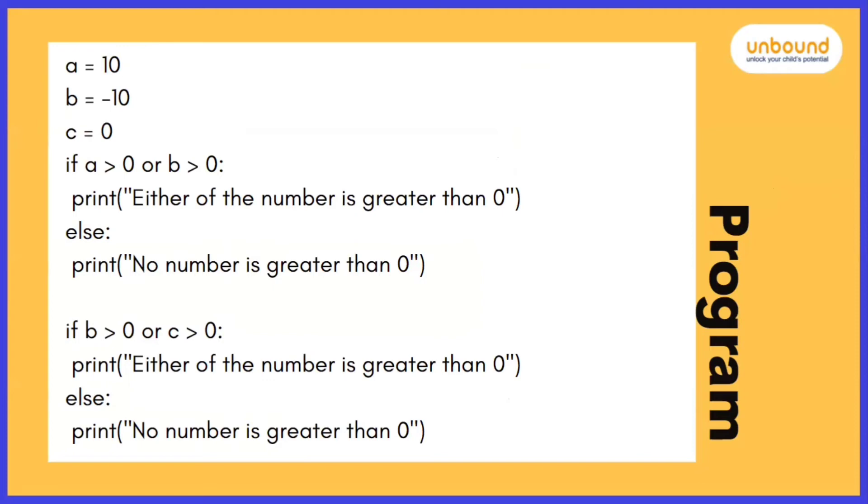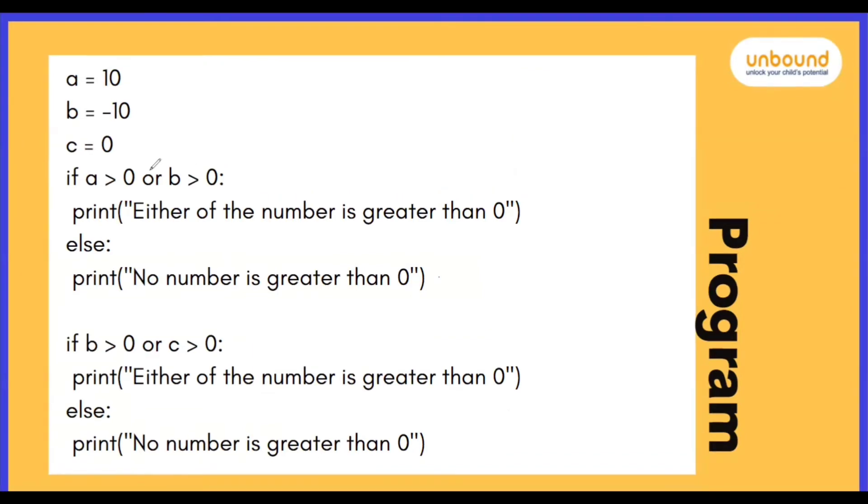We have a program. So first you need to check the if else condition. So here A is 10. So it means 10 is greater than 0 or minus 10 is greater than 0. So let's see. Here we are using OR operator. It says only one of the conditions needs to be true. So one condition we got true, but another got false.